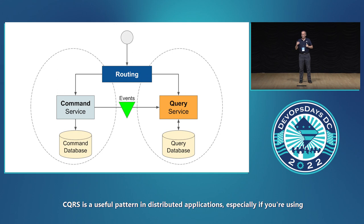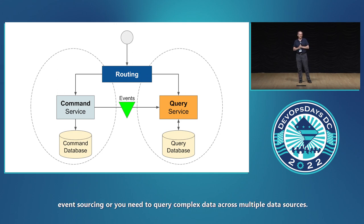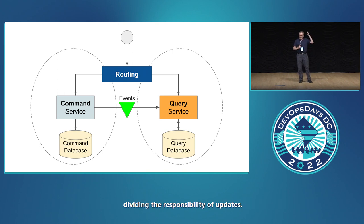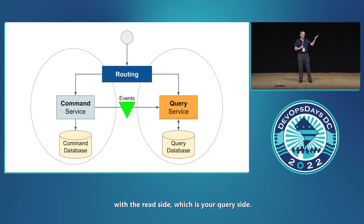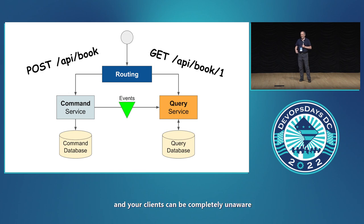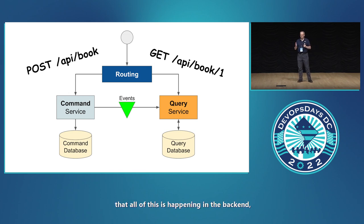CQRS is a useful pattern in distributed applications, especially if you're using event sourcing or you need to query complex data across multiple data sources. CQRS means command and query responsibility segregation, which just means dividing the responsibility of updates — that's the command side — with the read side, which is your query side. Routing can be handled through an API gateway or ingress in Kubernetes, and your clients can be completely unaware that all of this is happening in the back end, which is great.